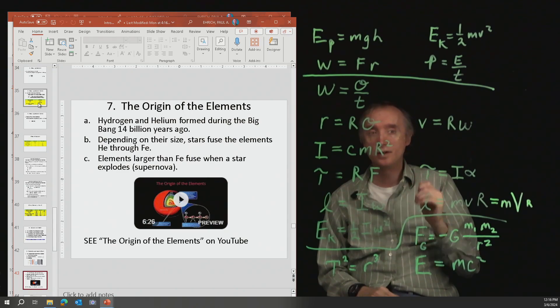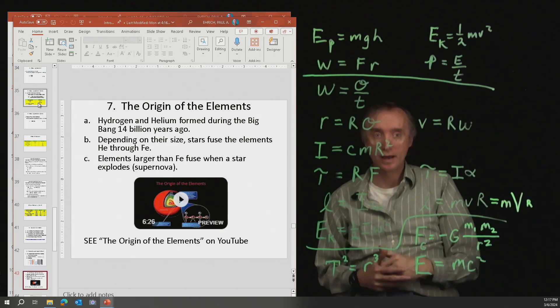The initial Big Bang created hydrogen and helium. Roughly 75% hydrogen and roughly 25% helium were formed during the Big Bang.